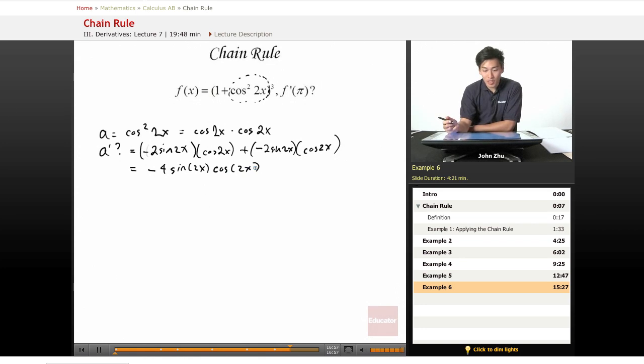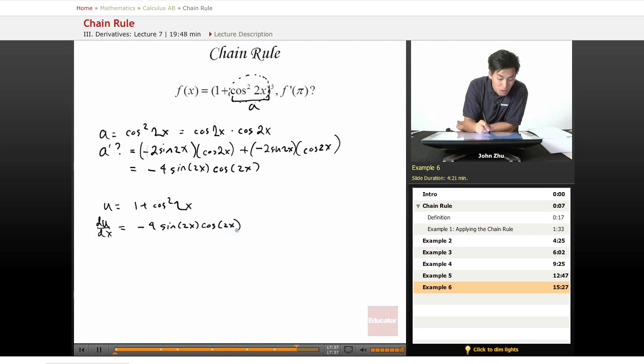So now we have a prime term. We don't need to worry about that later when we apply our over-encompassing chain rule for the entire expression. So let's say that u = 1 + cos²(2x). So du/dx equals the derivative of cos²(2x) plus 1, but the one term becomes 0 when you take the derivative. So this becomes -4sin(2x)cos(2x).